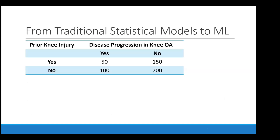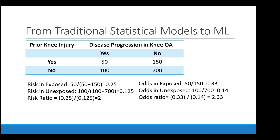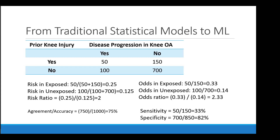For a quick example, consider osteoarthritis disease progression as the outcome and prior knee injury as the exposure. The risk of progression given a prior knee injury is 25%, and without prior knee injury is 12.5%, giving a risk ratio of 2. The odds ratio is 2.33, the accuracy is 75%, the sensitivity is 33%, and the specificity is 82%. To model this with a statistical model we could use logistic regression.